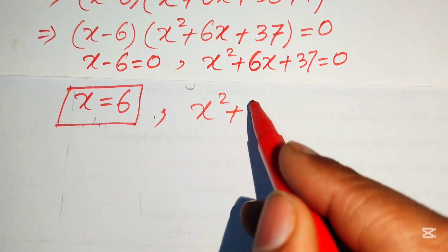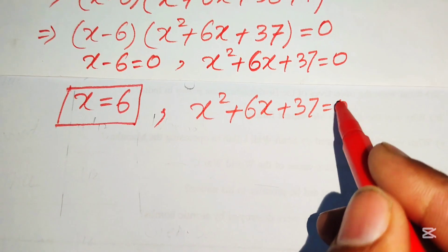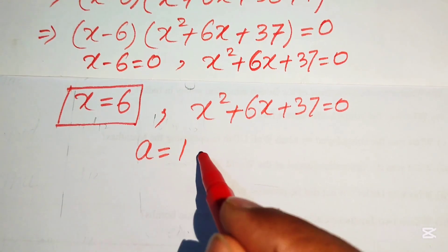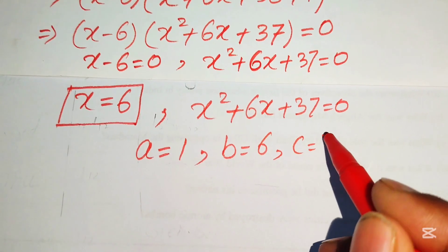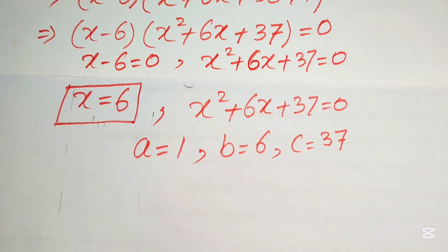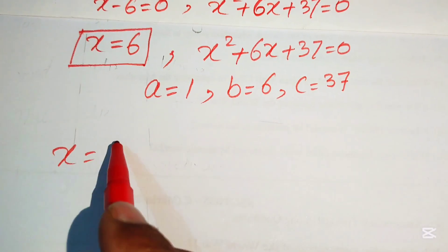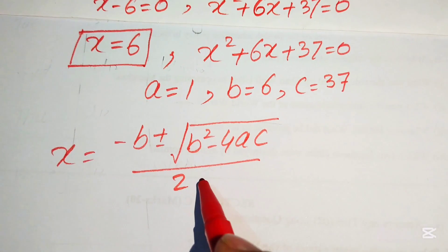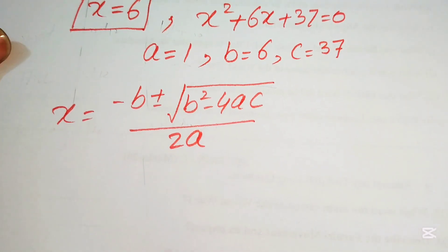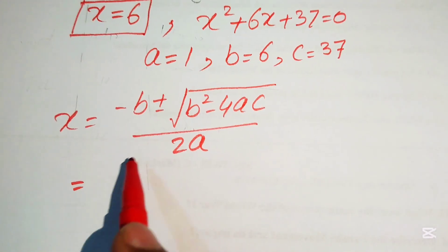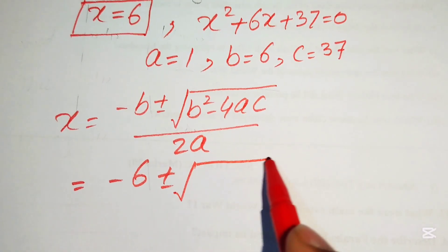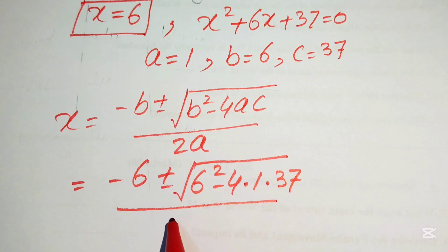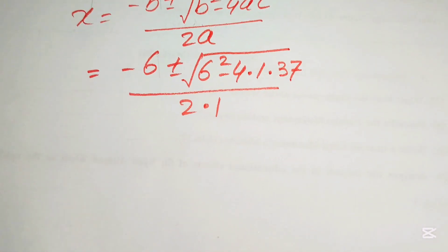To solve the quadratic, we identify the coefficients: a equals 1, b equals 6, and c equals 37. The quadratic formula is x equals minus b plus or minus the square root of (b² minus 4ac), divided by 2a. Substituting the values gives minus 6 plus or minus the square root of (36 minus 4 times 1 times 37), divided by 2.